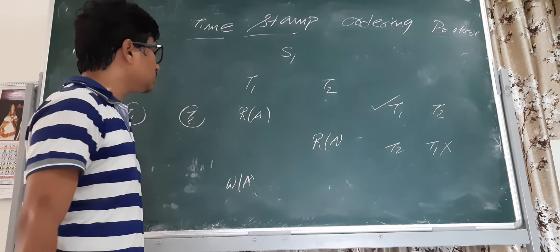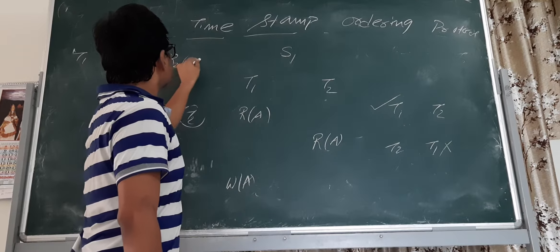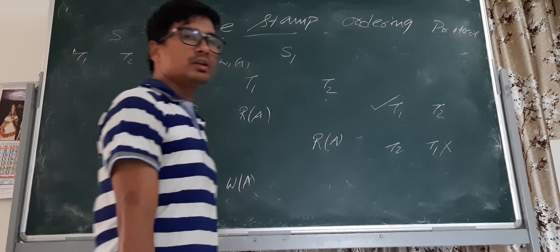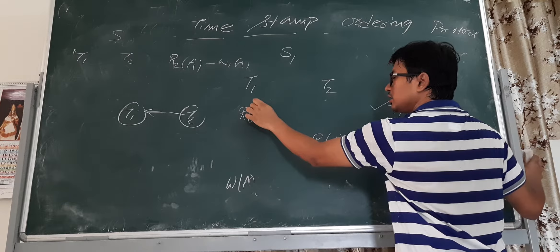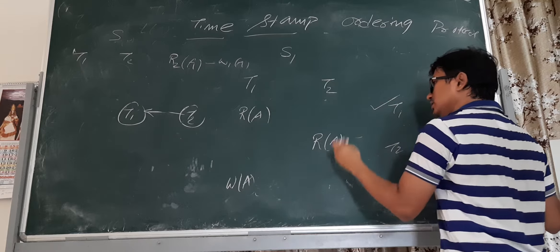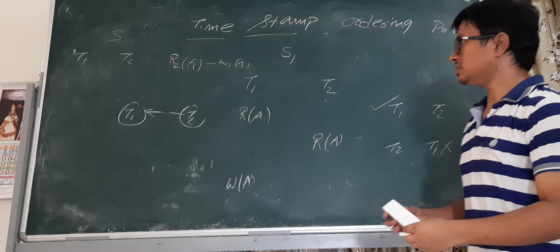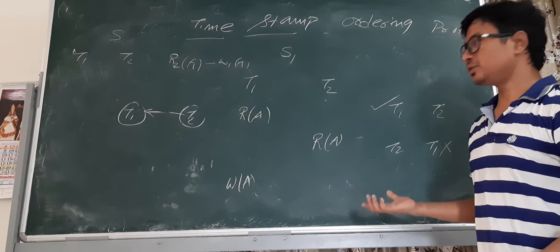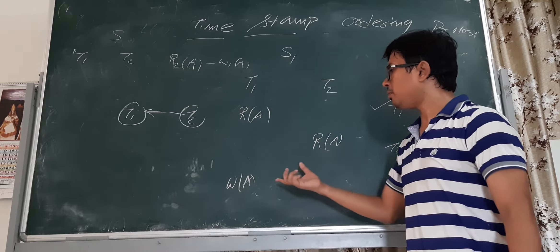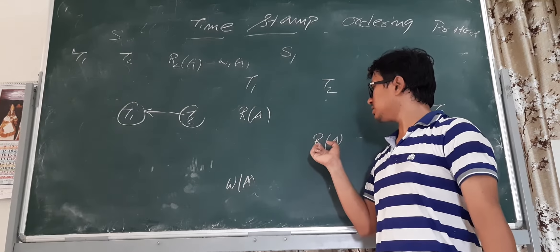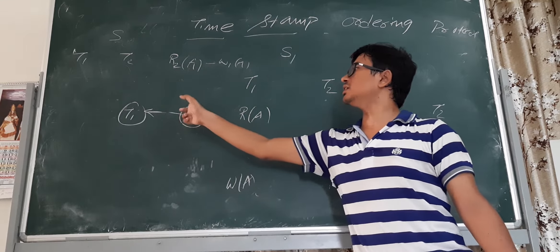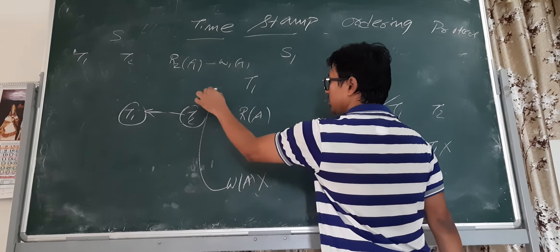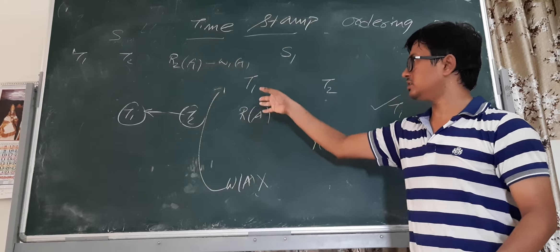Read-read is not a conflict operation. However, write-read is a conflict. In the schedule, the write in T1 and the read in T2 conflict, and this creates an edge from T2 to T1 in the polygraph. This says T2 should execute before T1, which violates the timestamp ordering since T1 must execute first. This conflict is caused by the write operation.